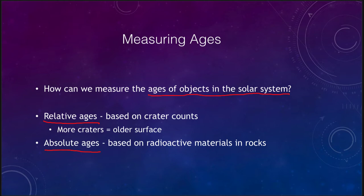If something is on top of something else, then the thing on top must be more recent. So if you see craters and one crater is on top of another crater, then the crater that is on top is the one that must have formed more recently. If you have a crater and some kind of fault crack going through it, then that fault must have come later. So it tells you relatively how old things are.